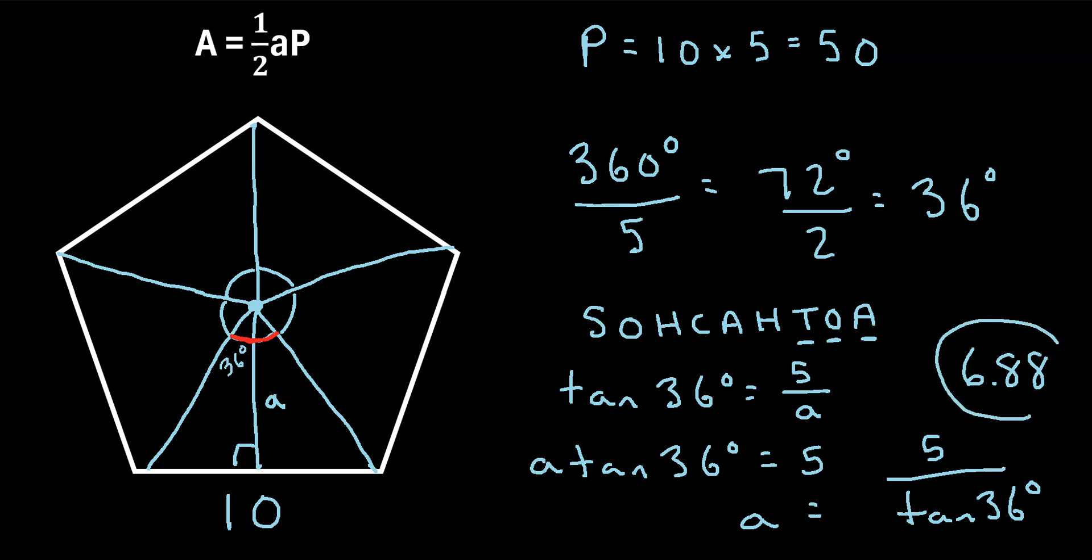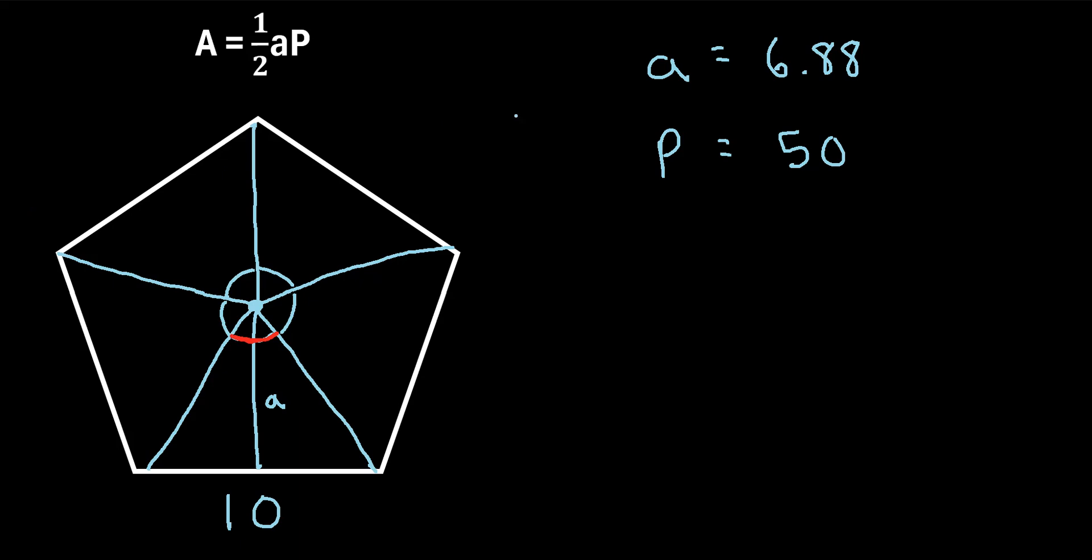So we found the apothem, and we found the perimeter. So now we have everything we need to plug into the formula to find this area. So I'll create a little room right here. Okay, so we found the apothem is 6.88, and the perimeter is 50. So plugging these into the formula for the area,